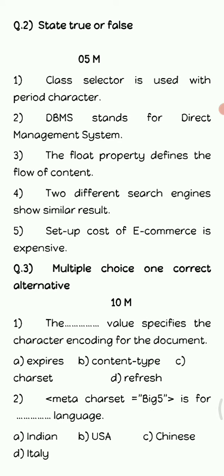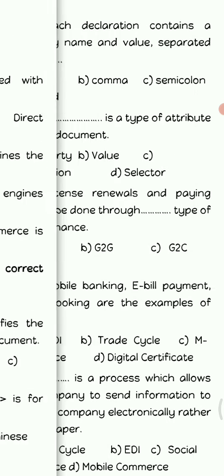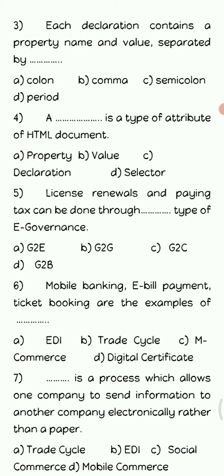Next is question number three: MCQs with one correct option. The dash value specifies the character coding of the document — the answer is 'charset'. Meta charset big five is for Chinese language. Next, each declaration contains a property name and a value separated by dash — the answer is 'colon'. However, if the question asks how to separate one property name from another property name, then the answer will be 'semicolon'. Don't get confused in such types of questions.